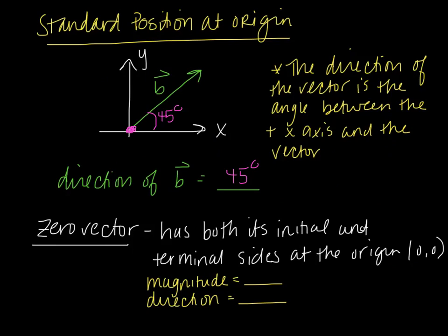A zero vector has its initial and its terminal points at the origin. So if you think about a coordinate plane, both the initial and the terminal points would be there at the origin. The magnitude of that vector — its size — is zero. The direction, because it's really just a point, can be any direction you want. So a zero vector has no magnitude in any direction.